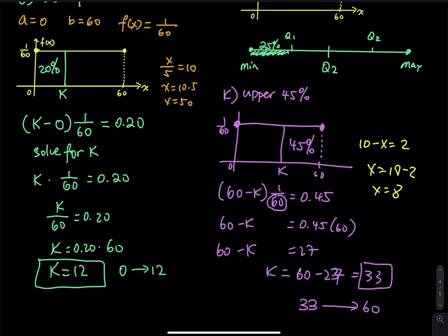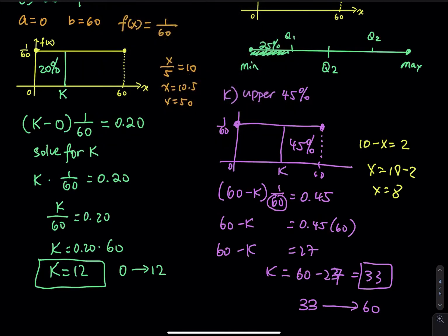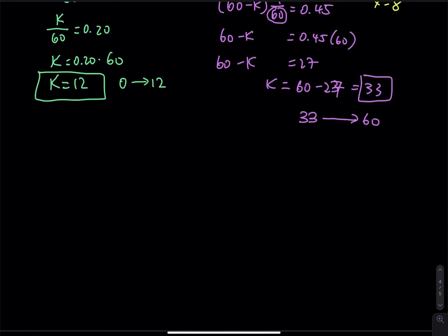The last one — middle 50 percent — is part L. You don't easily see this type in textbooks, so I think it is good to discuss as well.